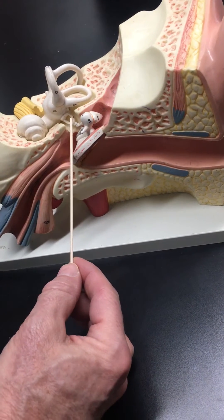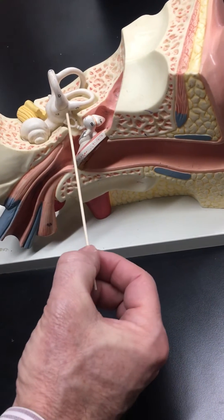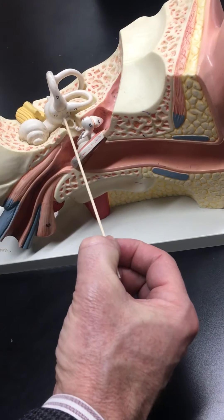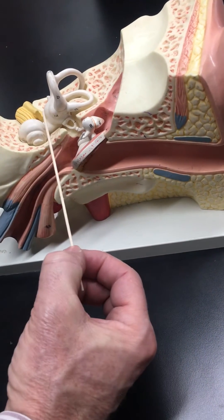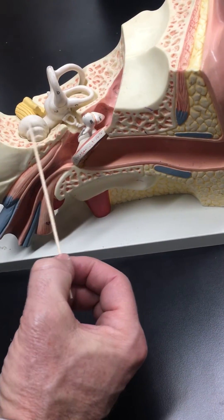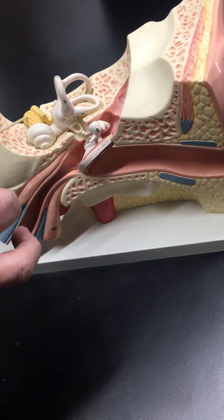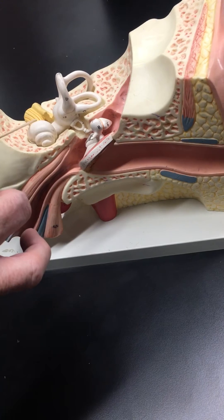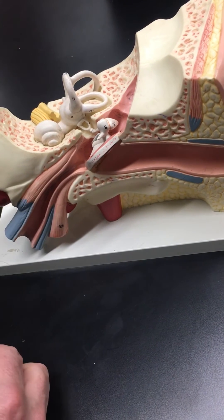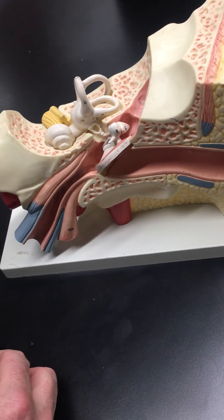Which vibrates the stapes, which vibrates a membrane that you can't see - the oval window - which vibrates the fluid inside the cochlea, which vibrates the endings of the vestibulocochlear nerve, sending it to the auditory cortex for processing.